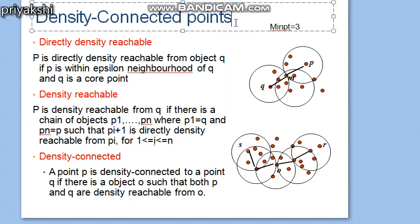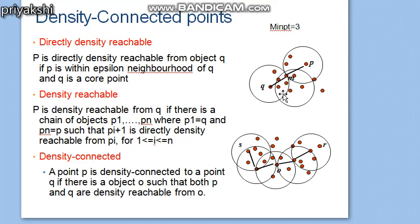...p is within the epsilon neighborhood of q, and q is a core point. We can see that these points contain more than three points because the minimum points value is three. In the epsilon neighborhood of p and q, there are more than three points, so p, m, and q are three core objects. We can say that m is directly density reachable from p, because m is within the epsilon neighborhood of p and p is a core point.